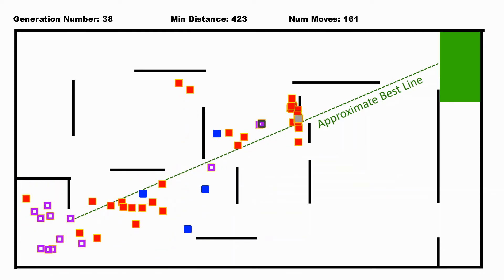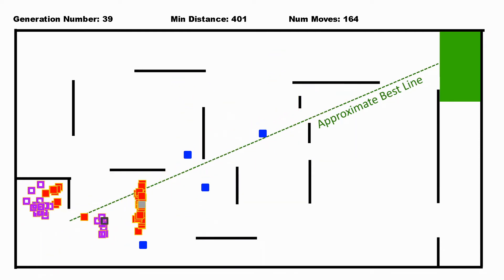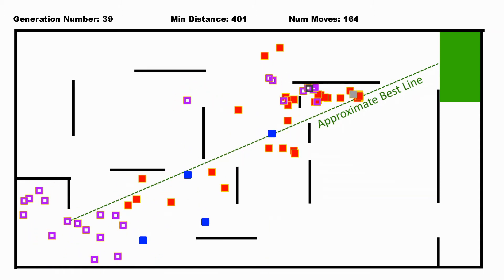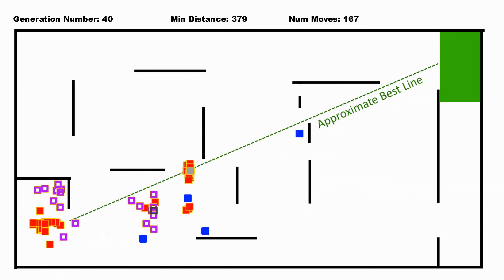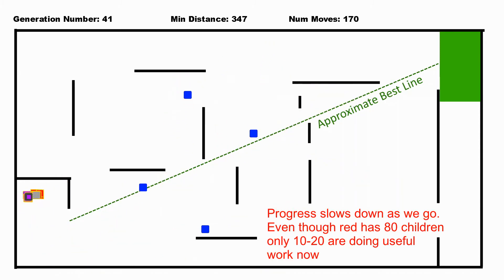So this gray square represents the leader of the red and this darker gray square represents the leader of the purple, and we can see we keep making progress each time.